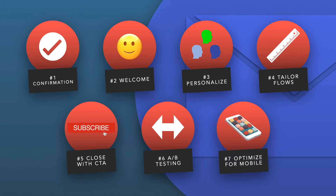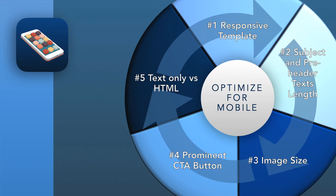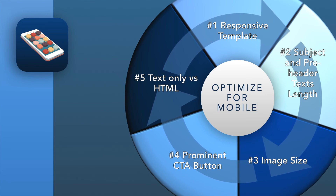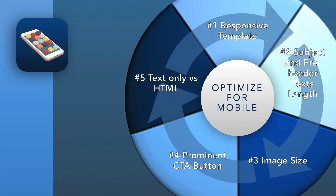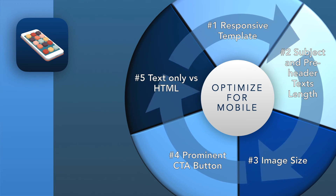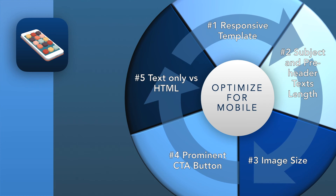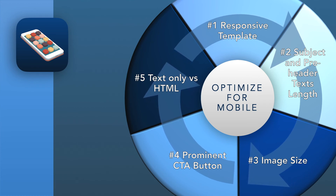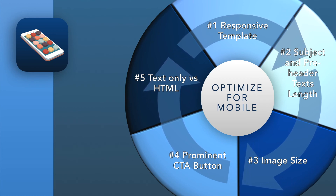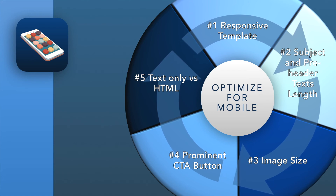Step number 7: Optimize for mobile. Since 67% of all emails are opened on mobile, it is essential to create emails that render well on mobile or your onboarding sequence will result in low engagement. First, you need a responsive email template that makes your email look good regardless of your device and screen size. Second, pay careful attention to the subject line and the pre-header text length, as most mobile devices will display a limited number of characters. Third, if you use images, ensure that they are sized properly so that they load fast and do not negatively affect the user experience.